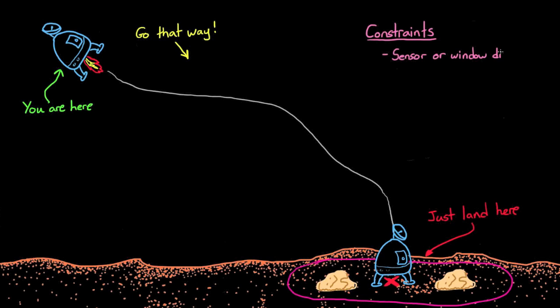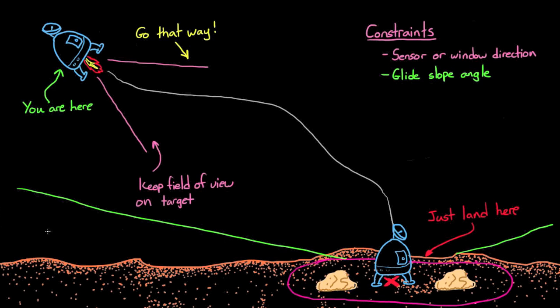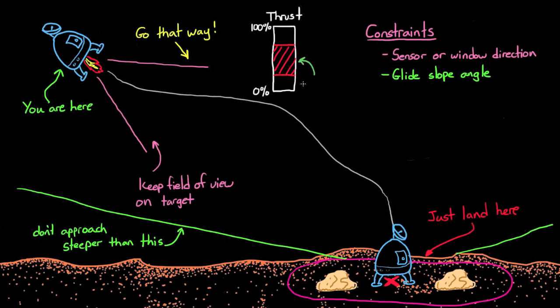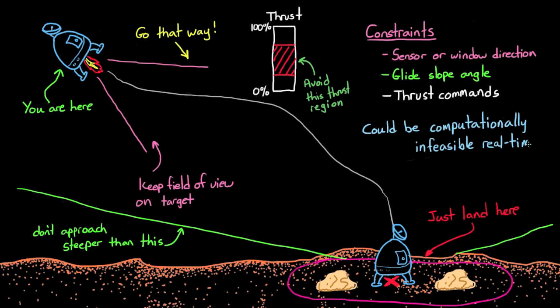Constraints can include things like making sure that the command window always faces the landing point for human missions, or ensuring that the glide slope isn't too sharp on approach, or don't allow the thruster to be commanded between, say, 20% and 60% of full thrust because it doesn't work well in that region. And once you start adding constraints into your controller, in general, it can become computationally infeasible to solve real-time while your spacecraft is descending.